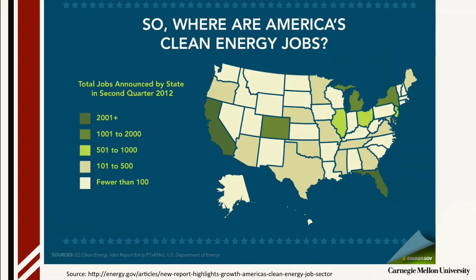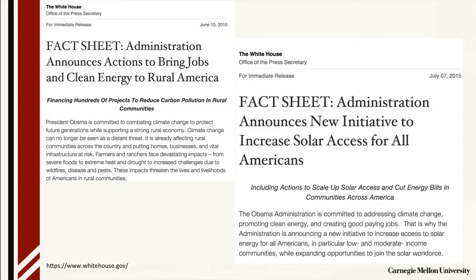Program evaluation is important for knowing whether or not a program is meeting its initial societal goals relative to the cost and effort put into the program, and making appropriate adjustments if it is not. For example, one White House fact sheet focuses on bringing clean energy jobs to rural communities where farmers and ranchers may be particularly affected by climate change due to severe flooding, extreme heat, or drought. Another focuses on increasing solar access in low- and moderate-income communities, not only for energy-related benefits, but for job creation. As these policies are announced, program evaluators will step in to see if they work or do not work.